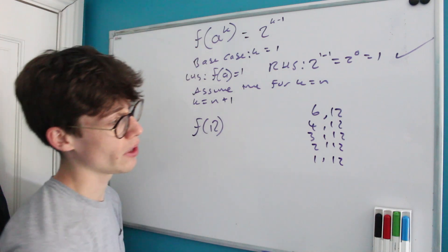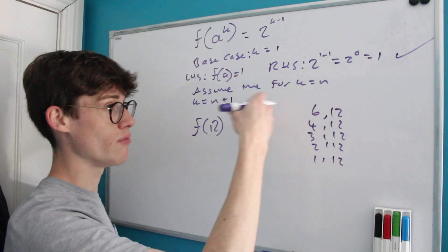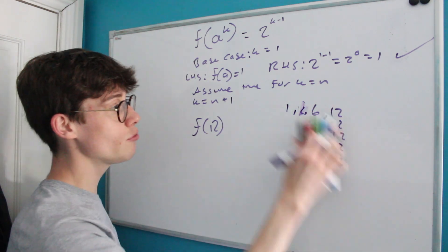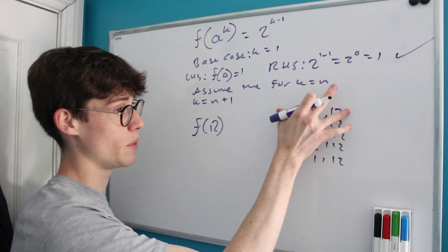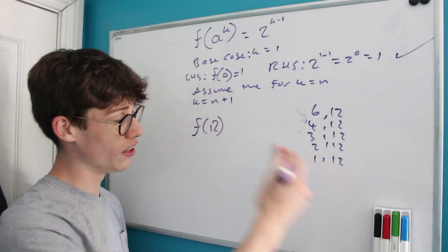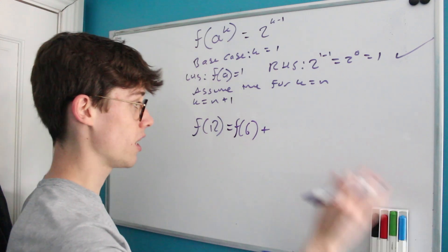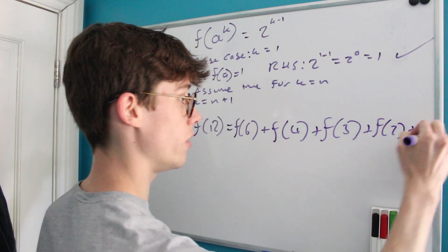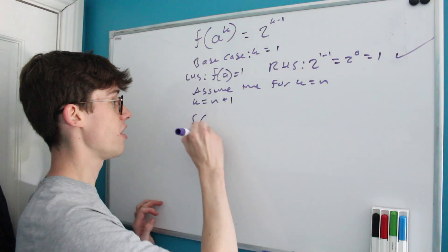There will be some number of lists with 6 as the penultimate term. But we've already computed that — it's exactly f(6), since the final term 12 doesn't change the count of valid prefixes. So we can write f(12) as the sum of f(d) over all divisors d of 12 that could serve as the penultimate term. This will be crucial for the inductive step.